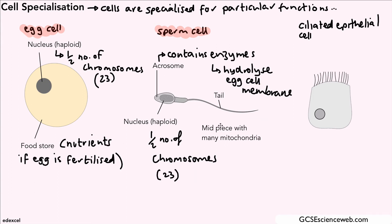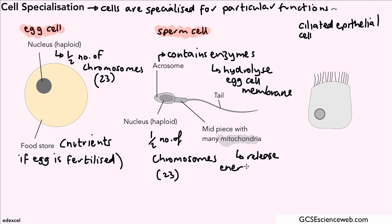The next thing to look at is what we call the mid piece, and that contains many many mitochondria — we looked at mitochondria in our last video. Mitochondria have the job of releasing energy by aerobic respiration, and you can imagine that that energy is very important to help the tail move, to help the sperm cell swim. Sperm cells in that mid piece have large numbers of mitochondria.